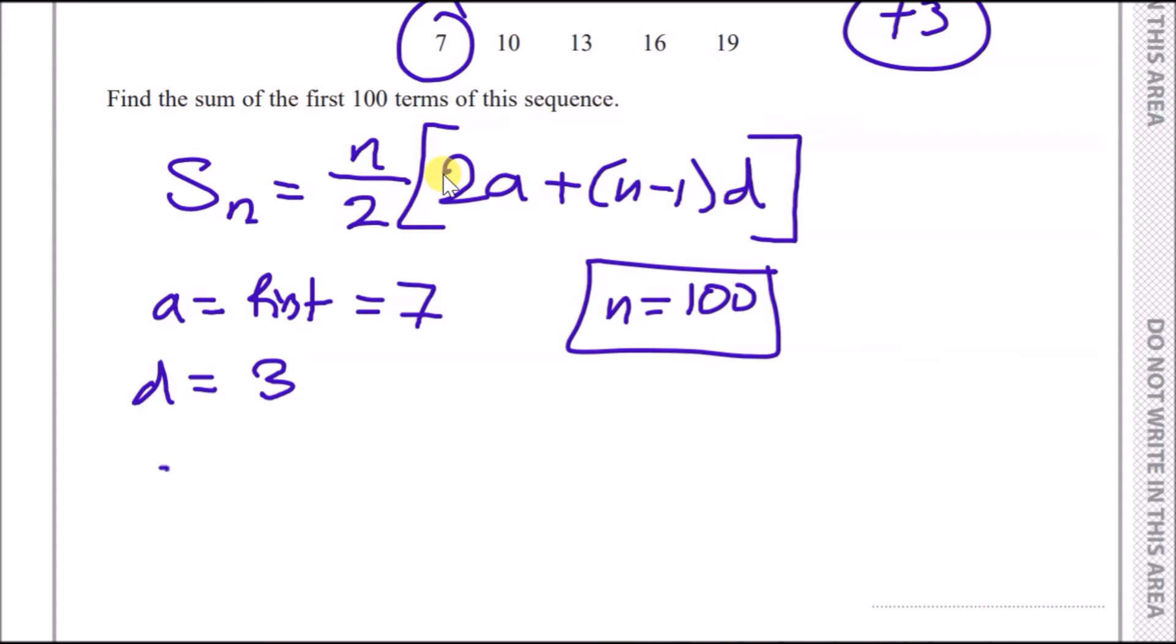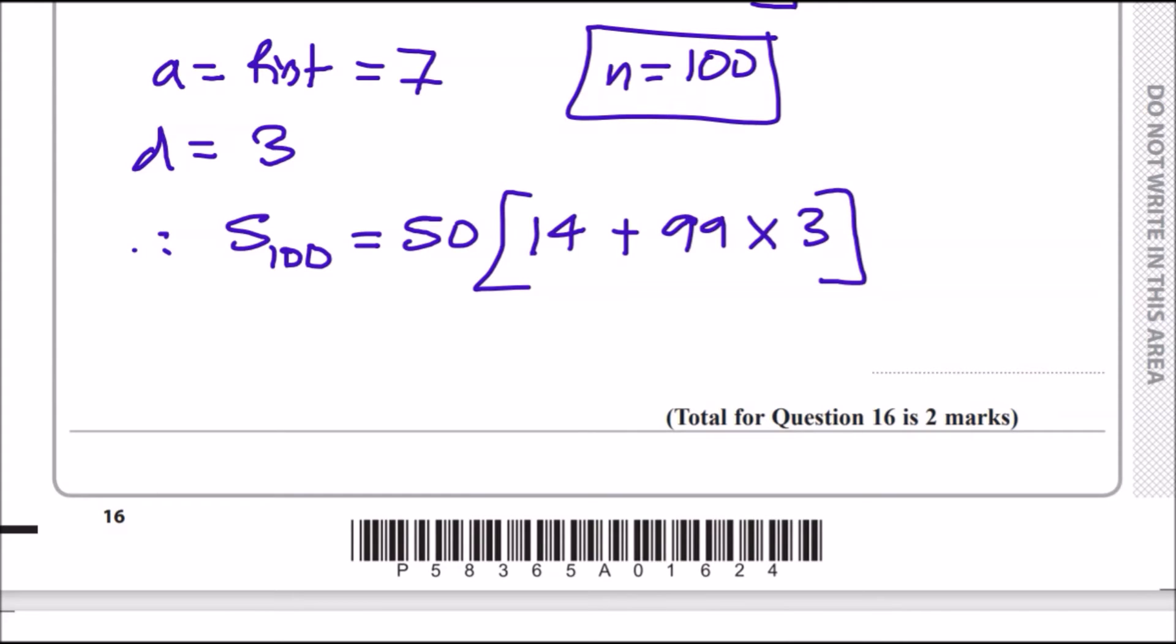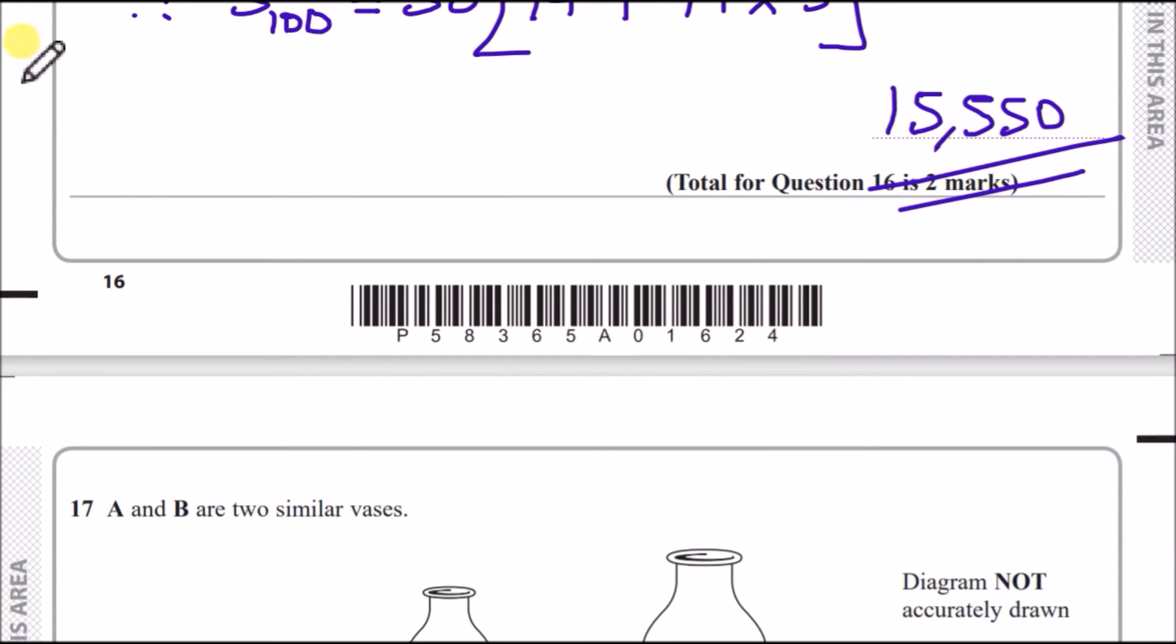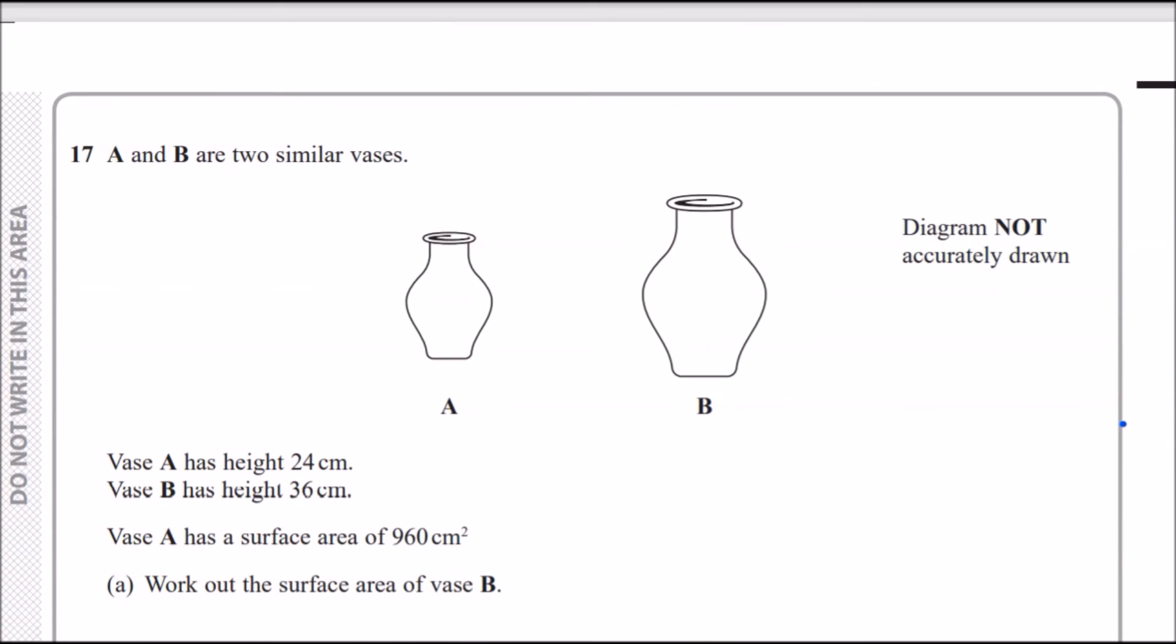Now, just put it in a calculator. So we can say that S100 is going to be 100 over 2, which is 50, and then 2 times A, which is 14. Now, N minus 1, so 100 take away 1 is 99, and then we're going to have 99 times 3. If you do that, you're just going to get a result of 15,550. And that's it, guys. So far, not bad, is it?